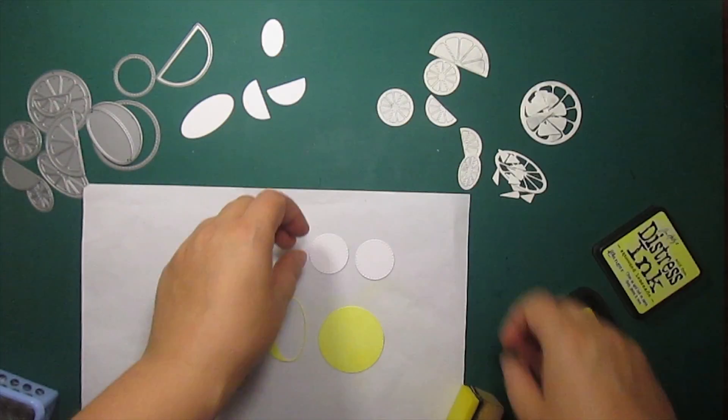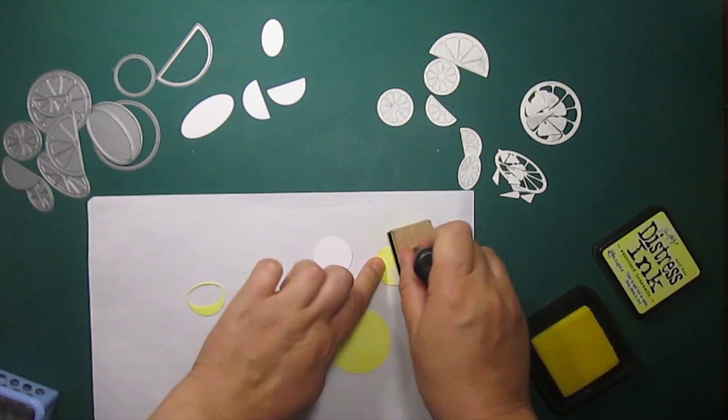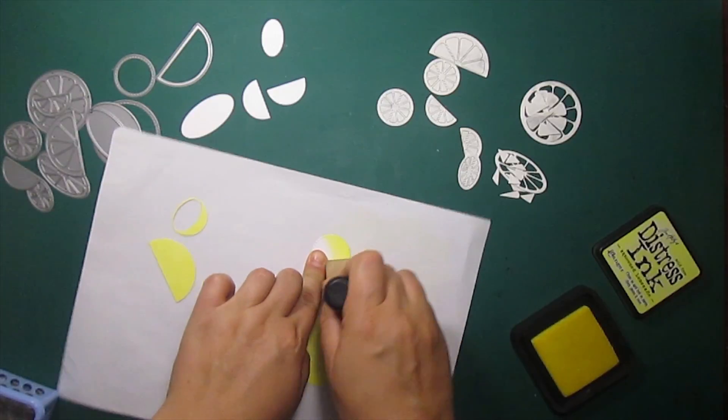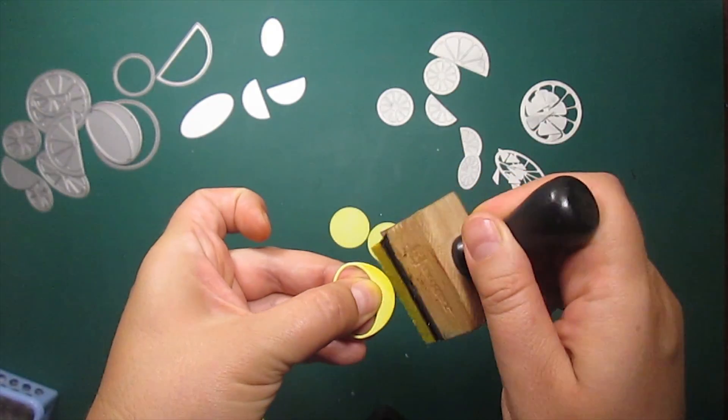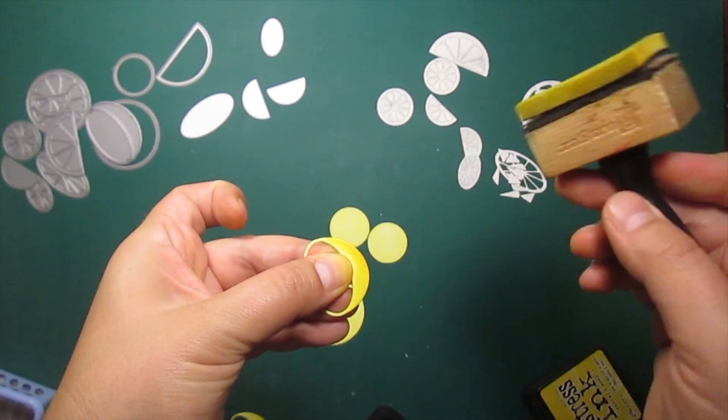Now I'm going to use my very favorite citrus dies by Memory Box. I'm coloring some pieces lemon yellow with the distress inks, then I'm adding slightly darker yellow for shading.